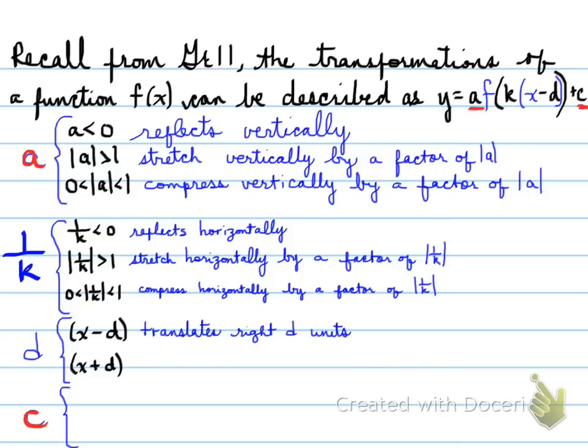The first one translates right d units. So again, it's opposite of what you see. Even though you see a minus, you will imply that it goes to the right positively. If you see x + d inside brackets, the function translates left d units.